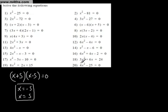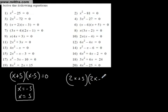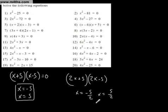This too is the difference of two squares: 4x² - 25. Here 4 is a square number, 25 is a square number, and there's a negative. So this factors as (2x + 5)(2x - 5), with solutions x = -5/2 or x = +5/2, which we can write as x = ±5/2.